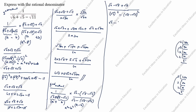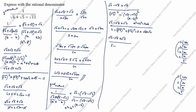Next: root 6 minus root 5 plus root 11 divided by root 6 square is 6, minus the expansion of root 5 minus root 11 whole square. Using the a minus b whole square formula: a square plus b square minus 2ab, this gives root 5 square plus root 11 square minus 2 into root 5 into root 11. So the denominator is 6 minus 5 plus 11 minus 2 root 55, which equals 16 minus 2 root 55.